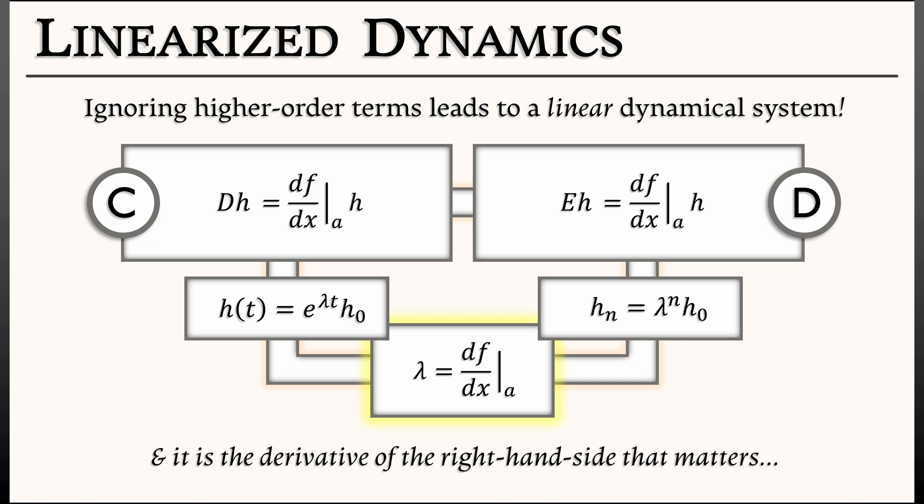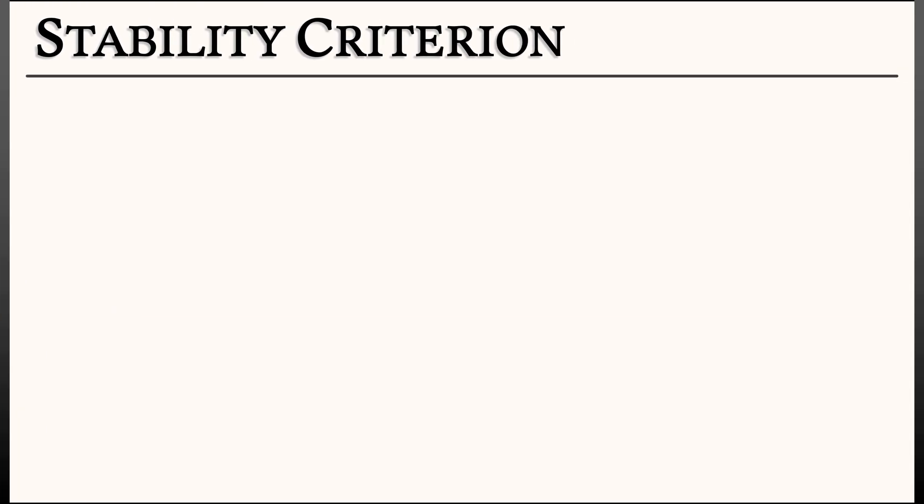Now, we know the explicit solutions to these linear dynamics. In continuous time, it's e to the lambda t times h naught. In discrete time, it's lambda to the n h naught. So that tells us how perturbations grow or shrink over time, continuous or discrete.